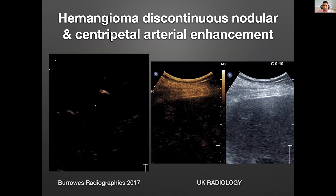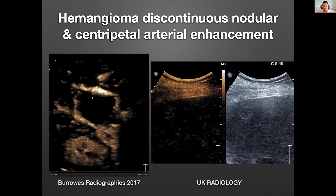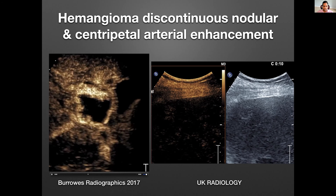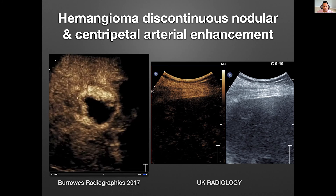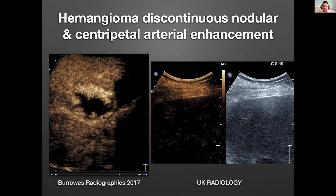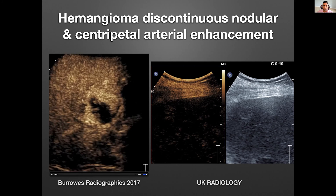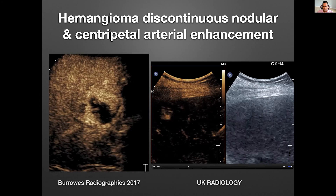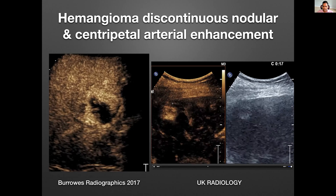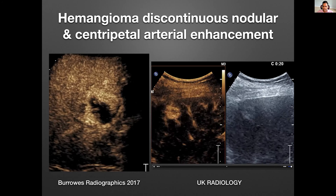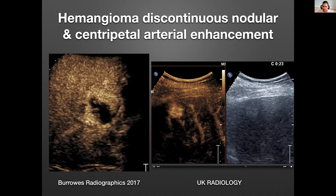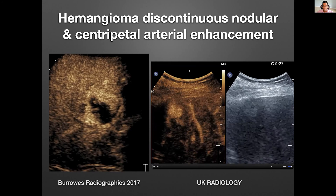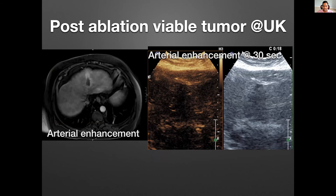Now showing a hemangioma pattern — discontinuous nodular arterial enhancement from the literature, suggestive of a hemangioma. At four minutes this continues to enhance, confirming it as a benign lesion. And an example from our university: the lesion is very faint on grayscale — this was the cover image from the title slide — but after microbubbles you can see very avidly discontinuous nodular enhancement on arterial phase imaging with microbubbles visible throughout the vessels. Again, it had sustained enhancement on delayed phase.